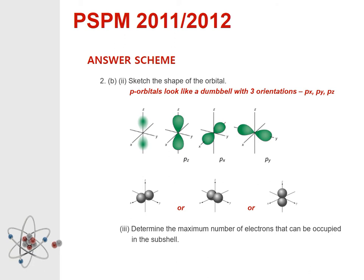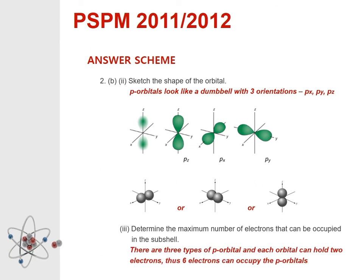Question 2b number 3: Determine the maximum number of electrons that can be occupied in the subshell. There are three types of p orbital and each orbital can hold two electrons. Thus six electrons can occupy the p orbitals.